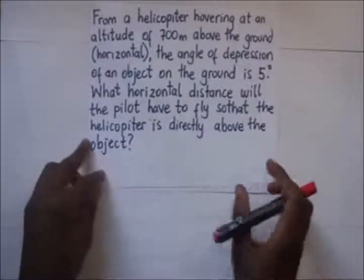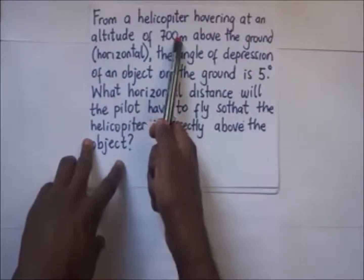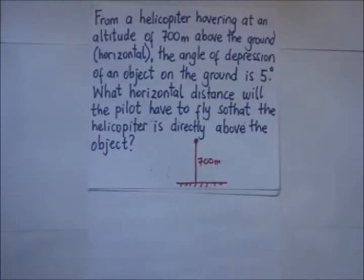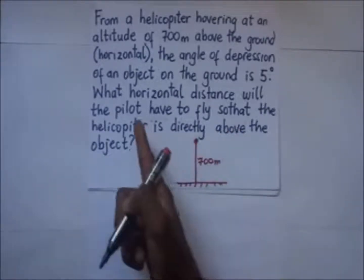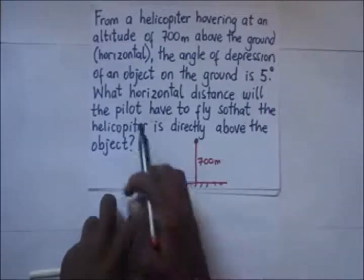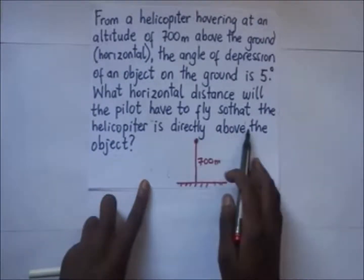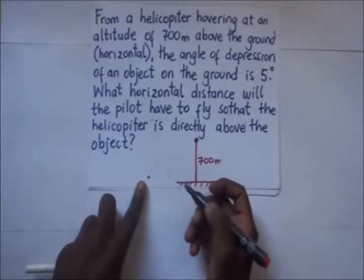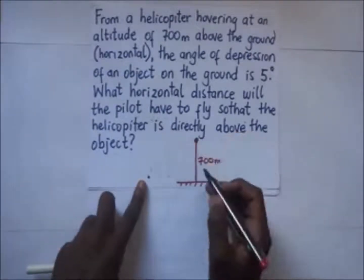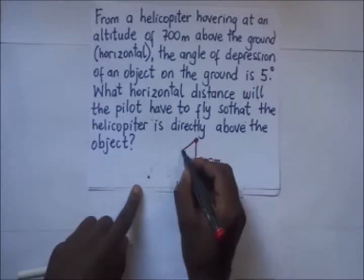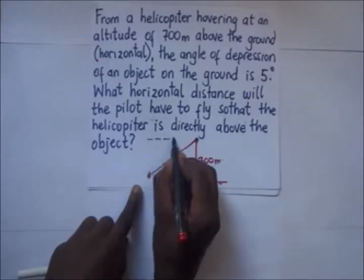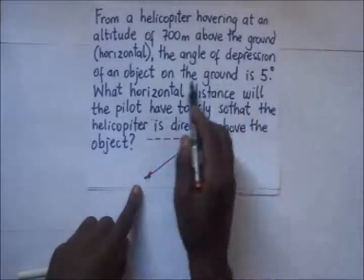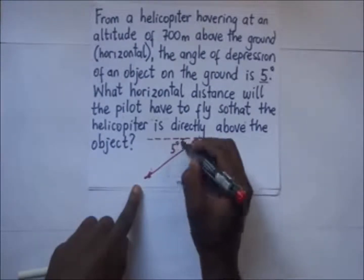Another question: from a helicopter hovering at an altitude of 700 meters above the ground — which is the horizontal — the angle of depression of an object on the ground is 5 degrees. What horizontal distance will the pilot have to fly so that the helicopter is directly above the object? The helicopter is at 700 meters above and can see this object at an angle of depression of 5 degrees.